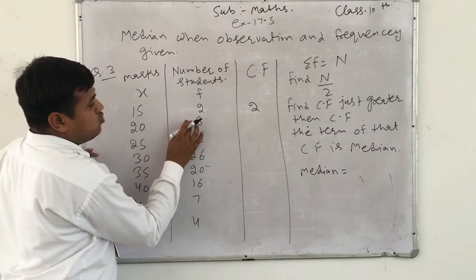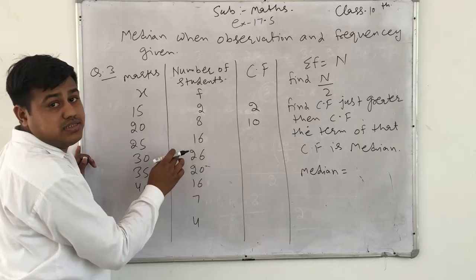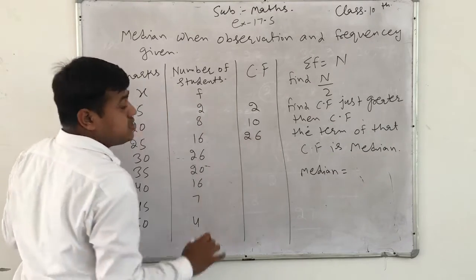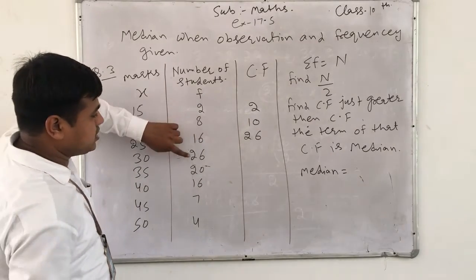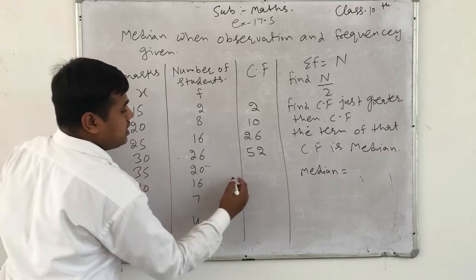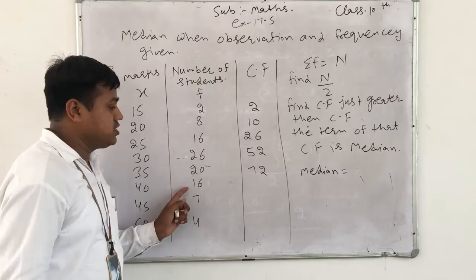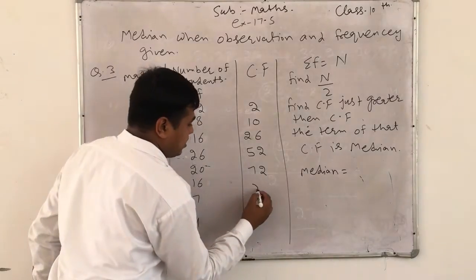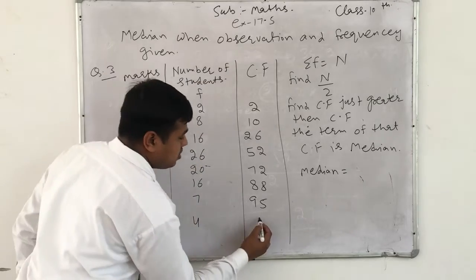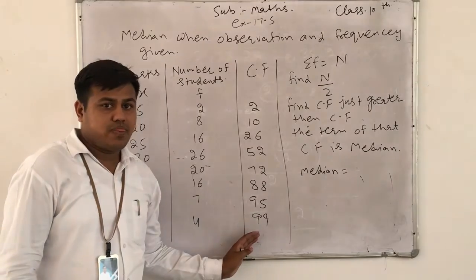Firstly, 2 means 2, then 2 plus 8 is 10, then 2, 8, 16, then we can say 2 plus 8, 10, 10 plus 16 is 26, then we get 26 plus 26 is 52, 52 plus 20 is 72, 72 plus 16 is 88, 88 plus 7 is 95, 95 plus 4 is 99.